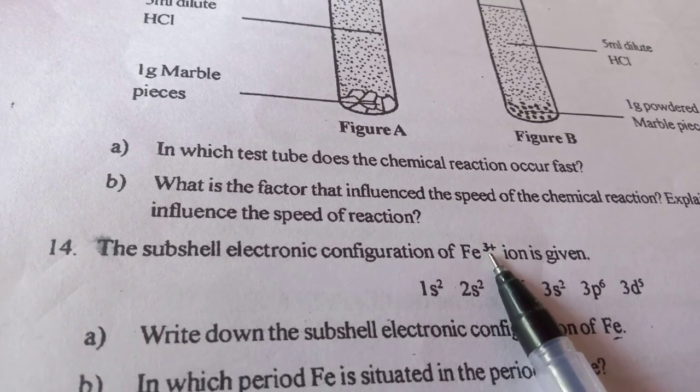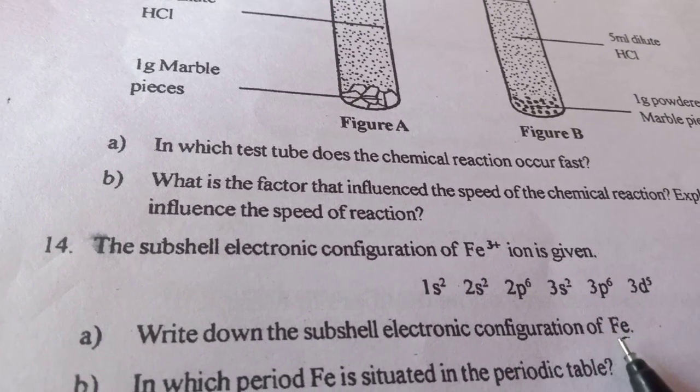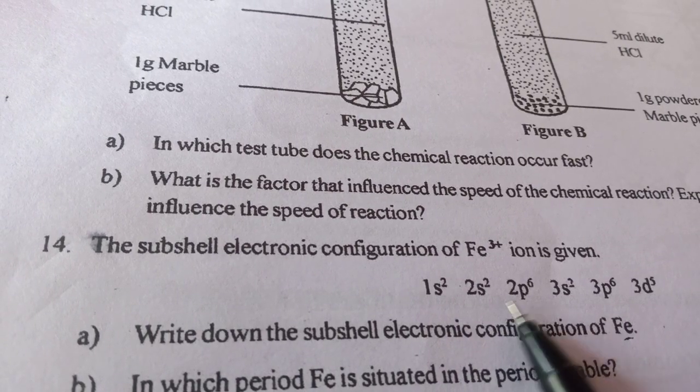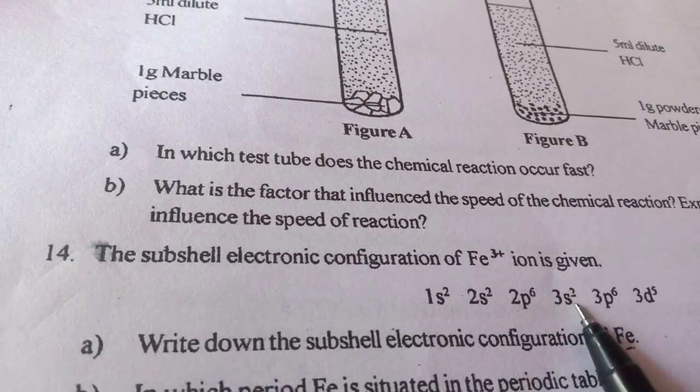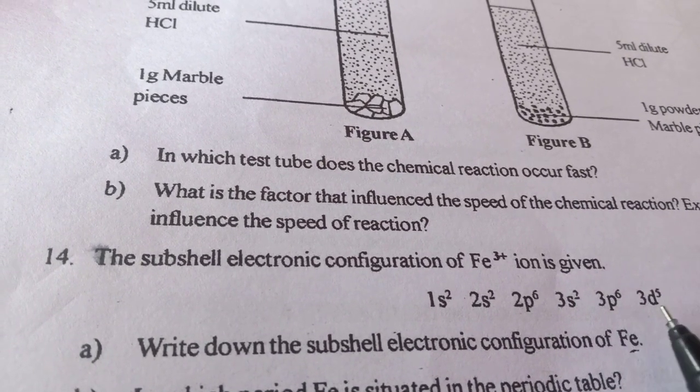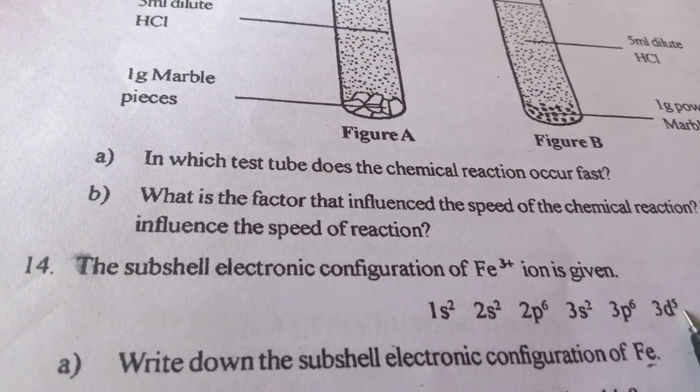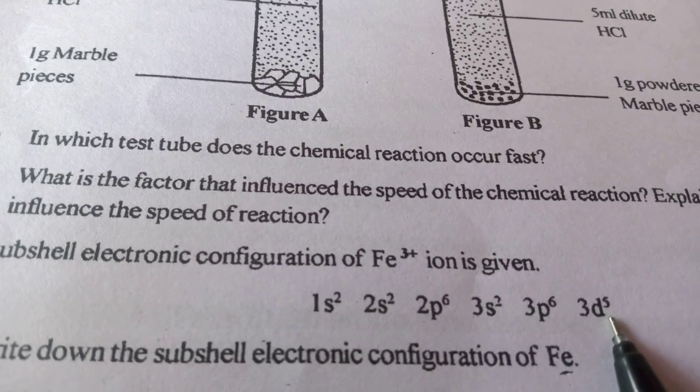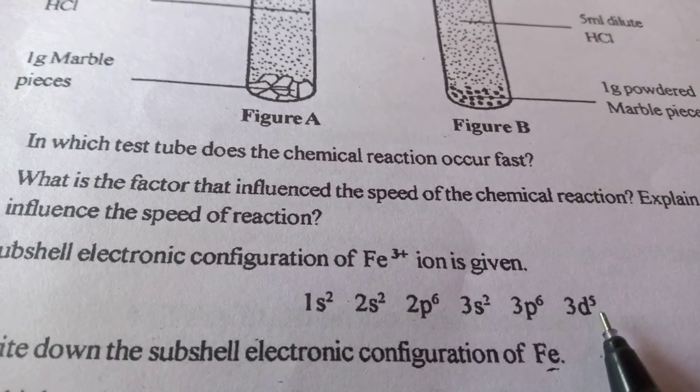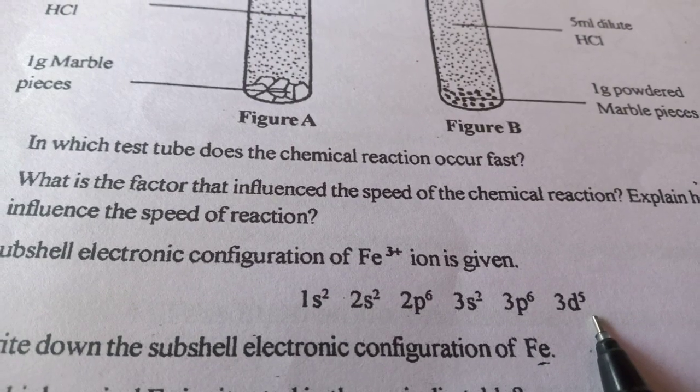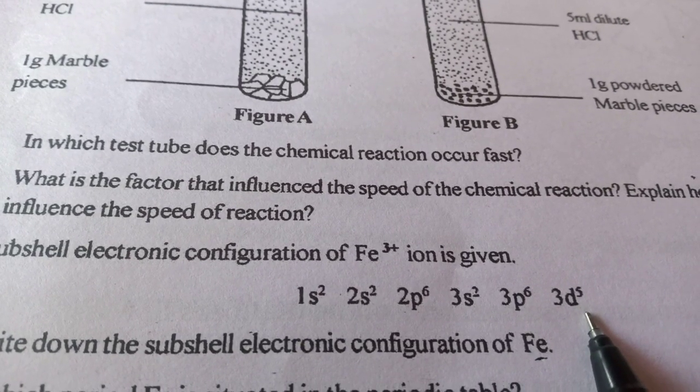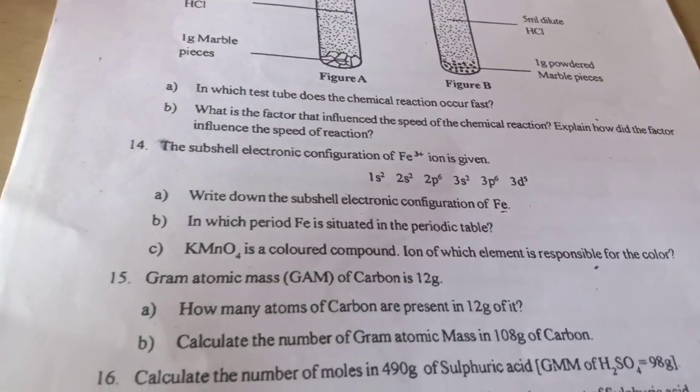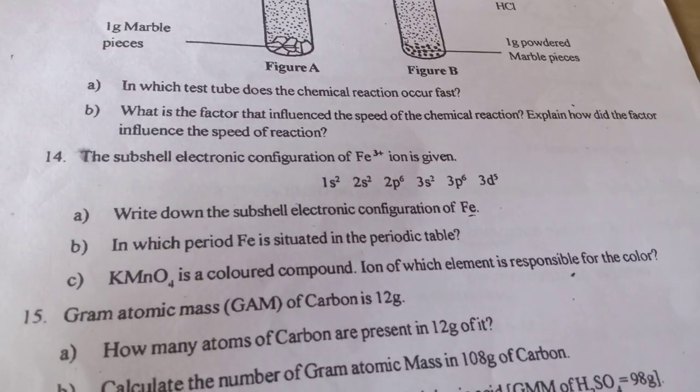Then we will have stable Fe, that is 1s2, 2s2, 2p6, 3s2, 3p6, then 3d5 here, then we have to add 3, that is 3d6, then 4s2. 3d6 and 4s2, that is the answer.